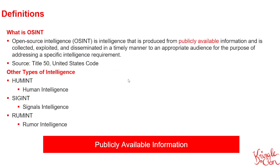So let's get started with some definitions. What is OSINT? OSINT is short for Open Source Intelligence and it's defined in Title 50 of the United States Code as intelligence produced from publicly available information. So publicly available — that's what the open part means. There are other types of intelligence we talk about inside the intelligence community, but not necessarily in the CTF world or in the cyber security world.